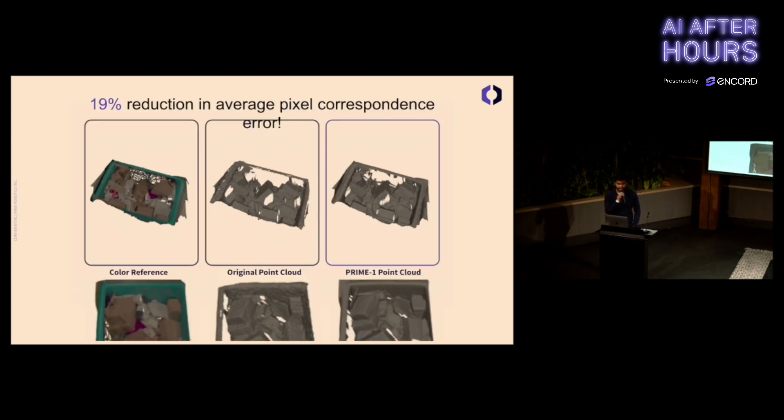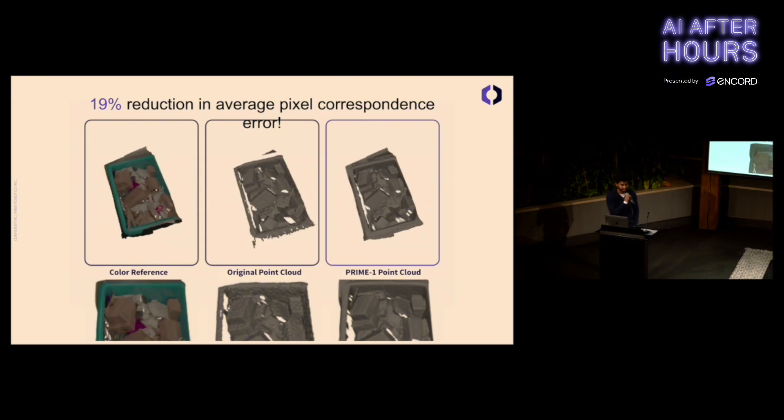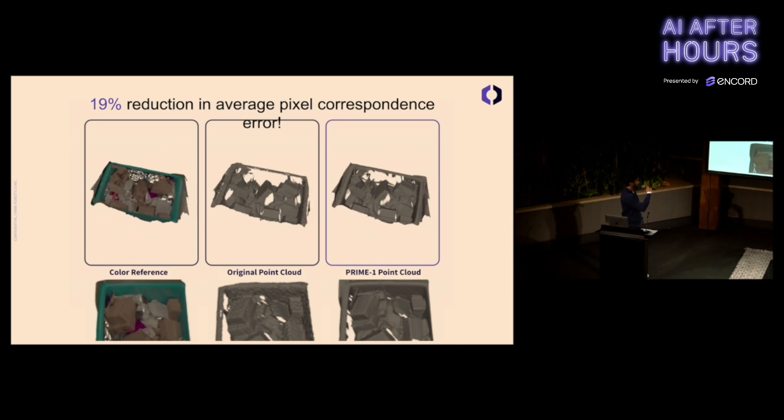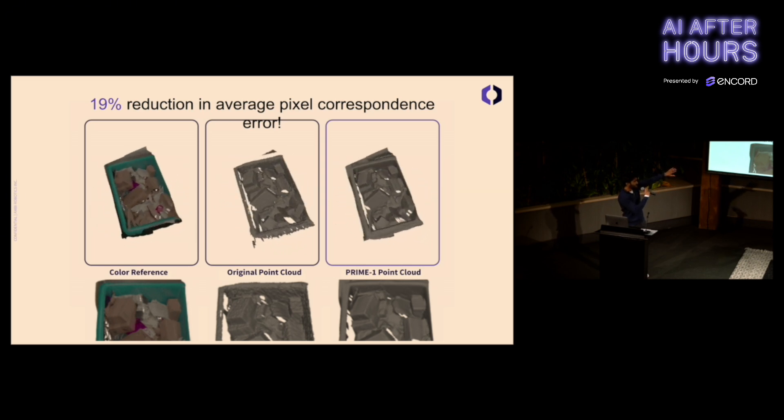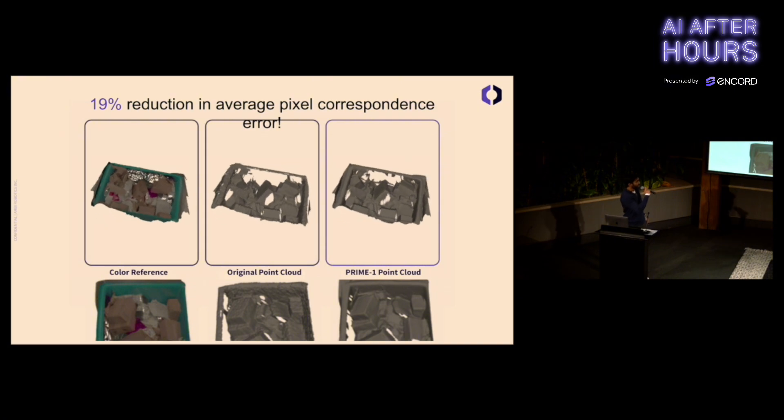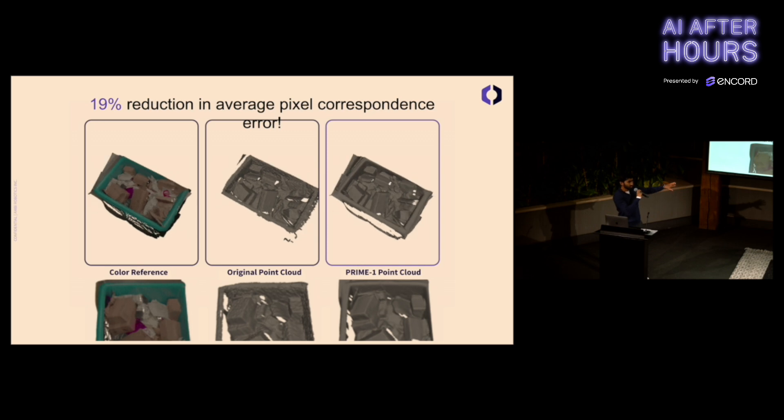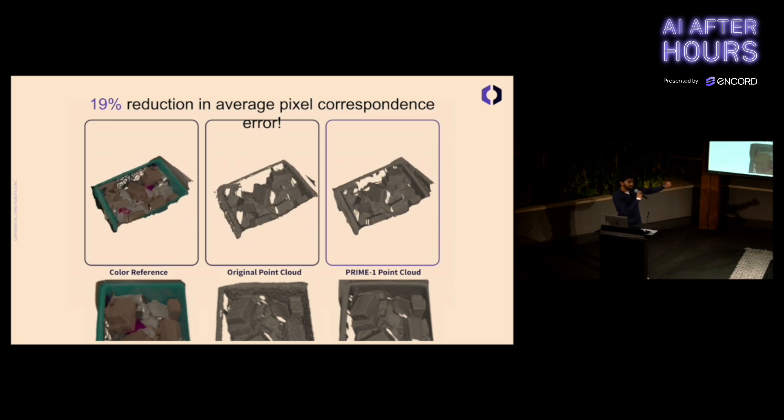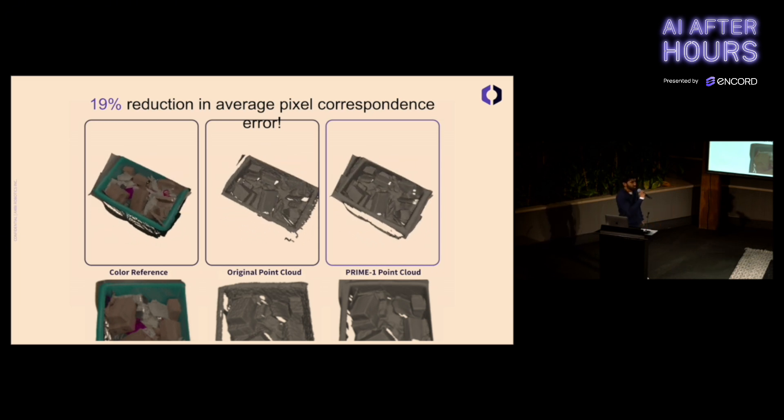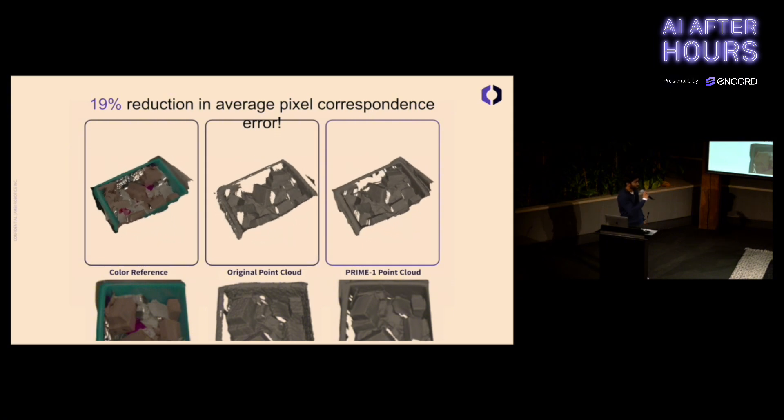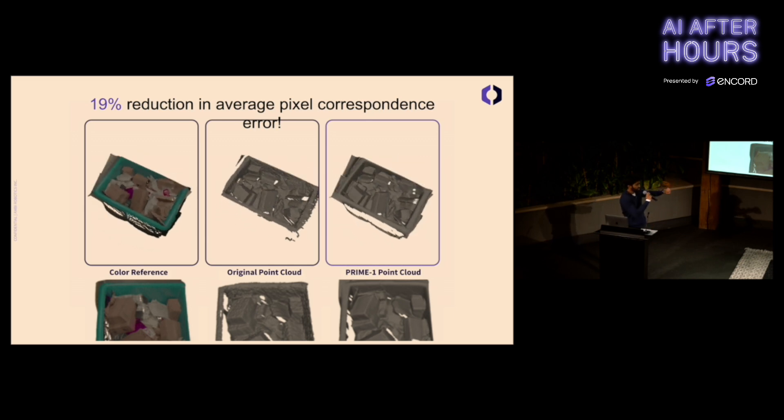Luckily, Prime excels at this task. Prime achieves a 19% reduction in error compared to our existing method. Here you have a point cloud visualization, where on the left you have a color reference. In the center you have the original point cloud. On the right you have the new Prime point cloud. You can see the new Prime point cloud is much smoother, surfaces are much clearer, and we can clearly see the delineations of objects. This means that our downstream policy can easily figure out what's a good place to grasp these objects. In the case of a suction gripper, it can look for flat planar surfaces.